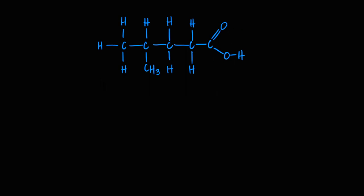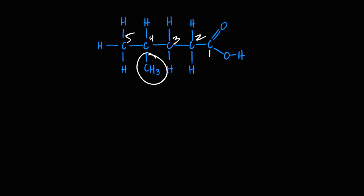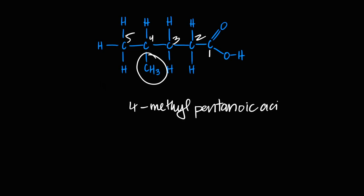Another example: one, two, three, four, five carbons with the acid — so it's pent. All single bonds — '-an.' A methyl group is on carbon four. The name is 4-methylpentanoic acid.